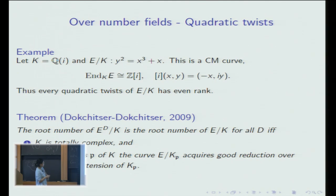Now let's think over the general number field. The Goldfeld conjecture would not hold over a general number field. Let K be Q(i) and E is an elliptic curve given by y squared equals x cubed plus x. Then E has a non-trivial K endomorphism gi, sending x to minus x, y to iy. Then every quadratic twist of E over K has even rank.